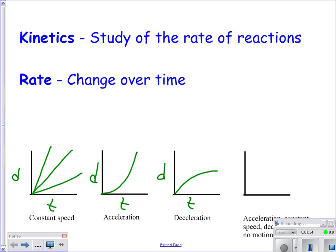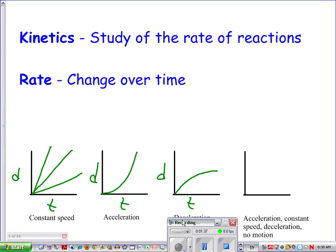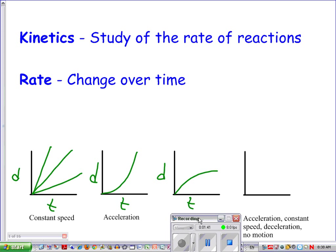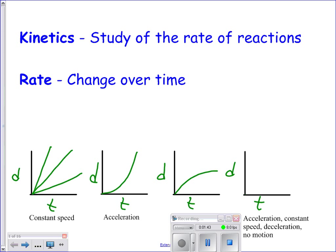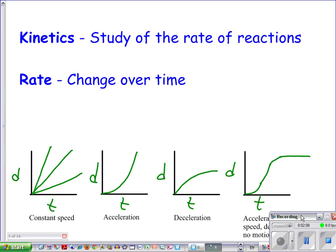And then finally this last one what this says is acceleration then constant speed then deceleration then no motion. So what we would expect there if you have acceleration again you get this curve like that eventually you have constant speed so it flattens out, that's not very pretty but that's a straight line there. Deceleration so it starts to curve in this direction and then eventually no motion that means over time the time continues but you get no gain in distance. So that's what we would expect for a graph of that.